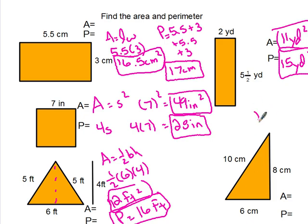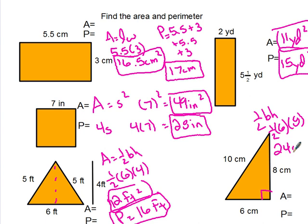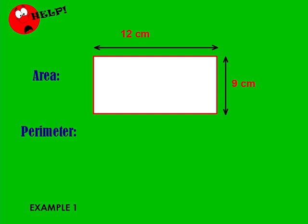This one — half base times height. Your base and your height always form a 90-degree angle. We call the base 6 and the height 8. Half of 6 is 3, and 3 times 8 is 24. Then add up all the sides: 10 plus 8 is 18, plus 6 is 24. Go ahead and pause it, come on back when you're ready.